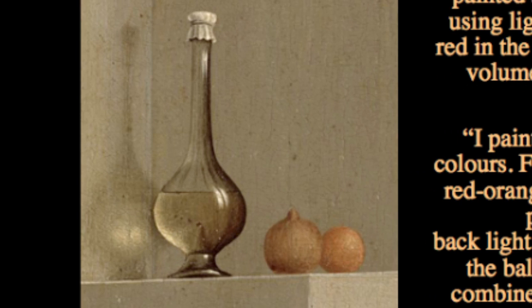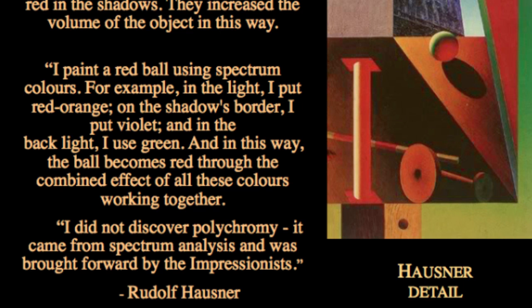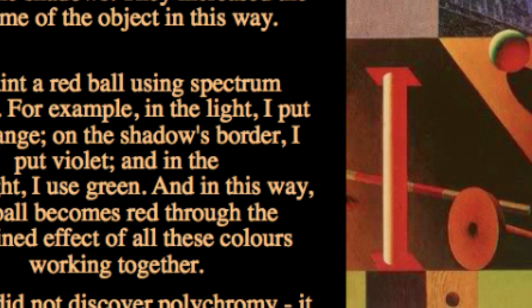Hausner writes: I paint a red ball using spectrum colors. In the light, I put red-orange. On the shadow's border, I put violet. And in the backlight, I use green. In this way, the ball is painted as a sphere in his landscape. The backlight is green, the front light is red, and where they meet he's created a violet. He's moved through the spectrum to create volume.